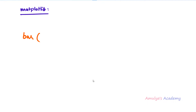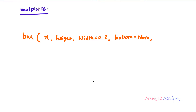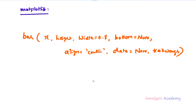The bar function belongs to the pyplot module, so you use matplotlib.pyplot.bar. The parameters are: x, height, width (default 0.8), bottom (default none), align (default center), data (default none), and keyword arguments. Here x and height are compulsory — you need these to create the bar graph — and the rest have default values.